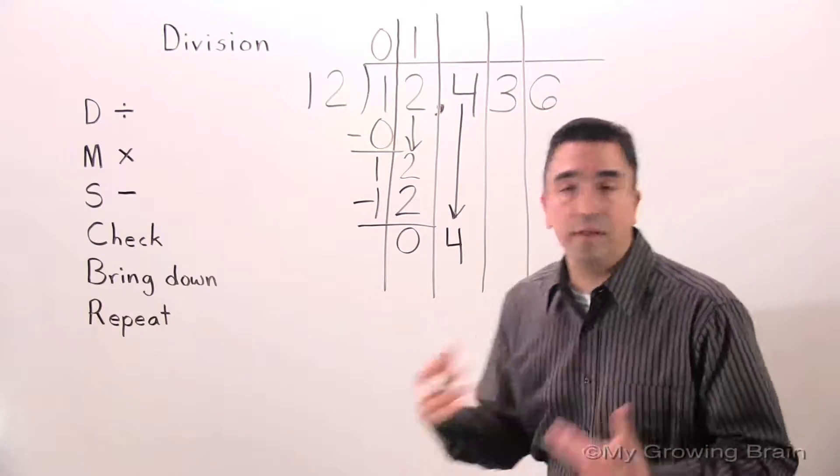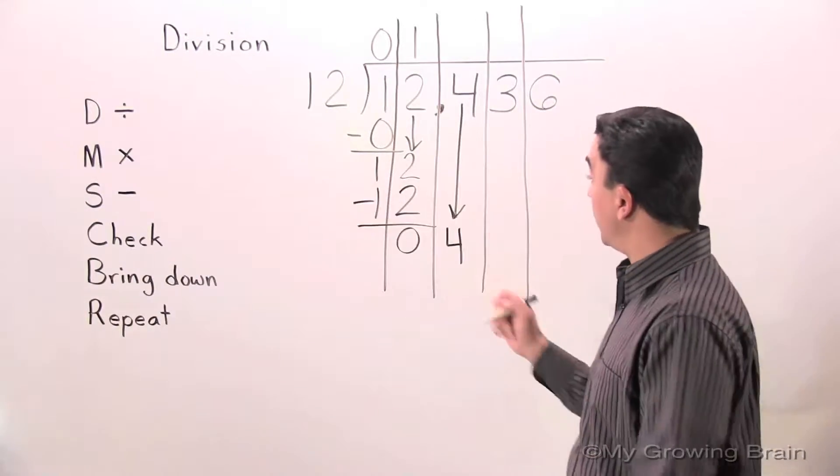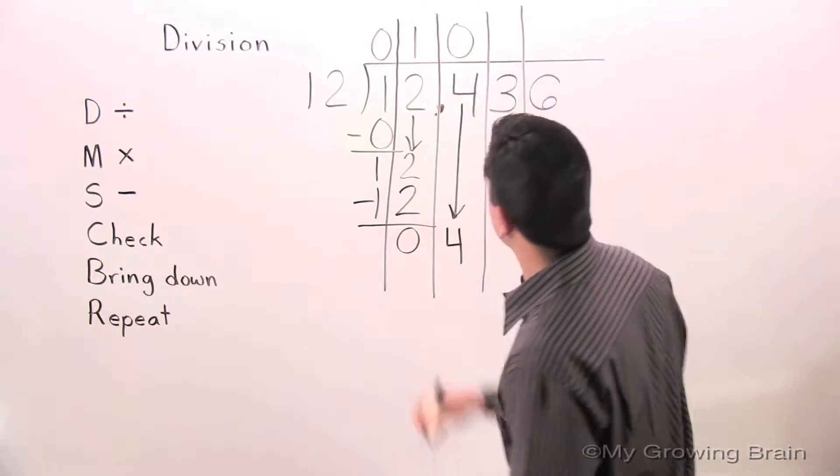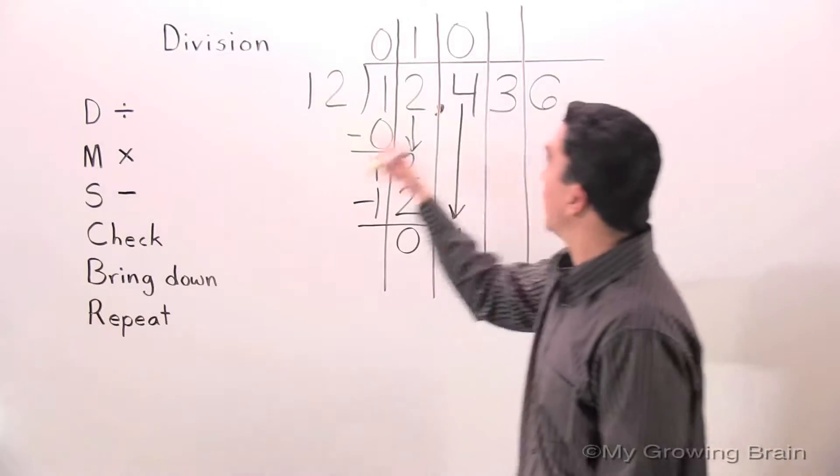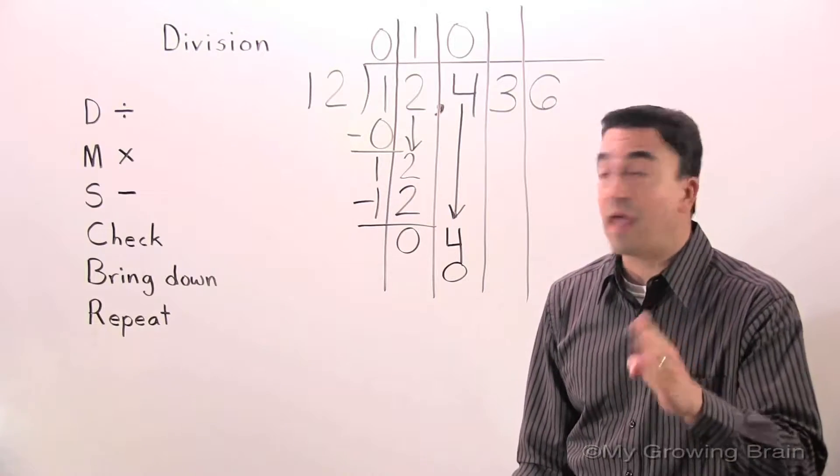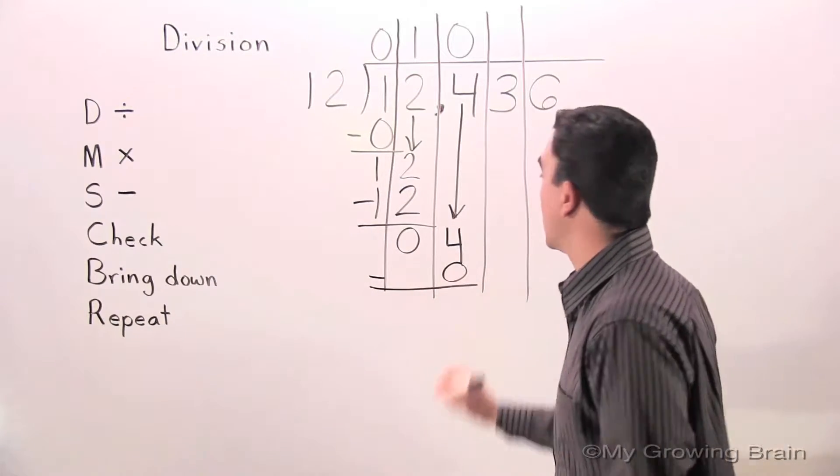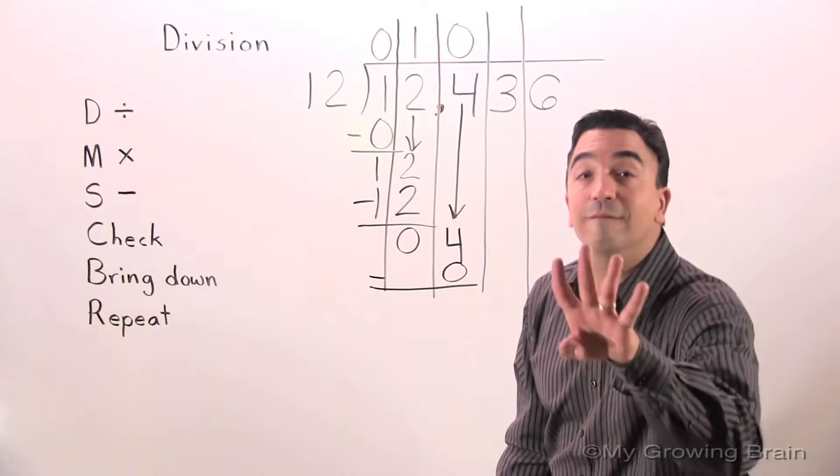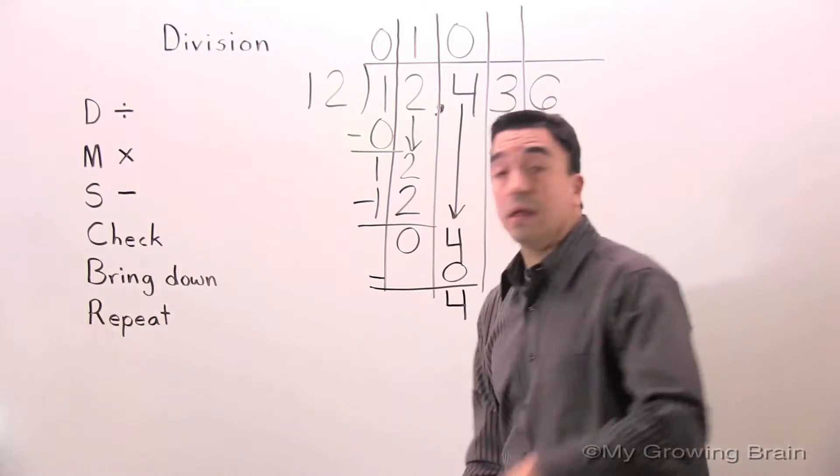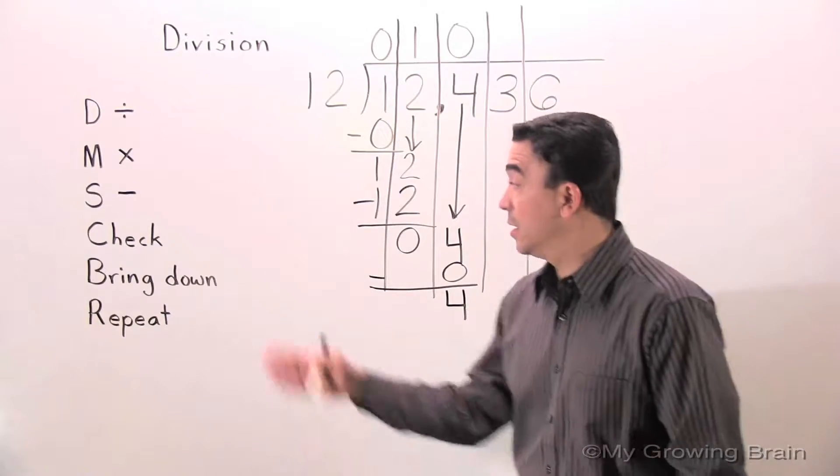Next step: repeat the process. Back to the top. Divide. 4 divided by 12, or 12 into 4. Can't do it. Use a 0. Next step: multiply. 12 times 0 is 0. Next step: subtract. 4 minus 0 is 4. Next step: check. 4 is less than 12. Keep on going. Bring down.